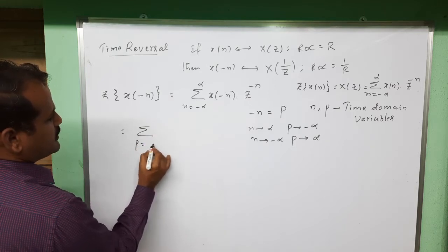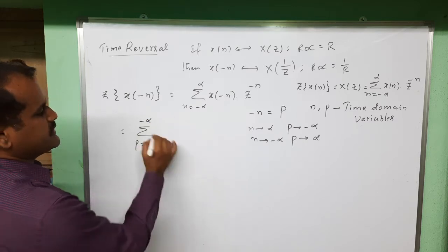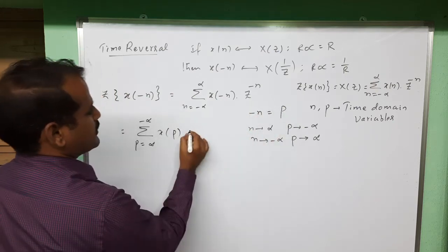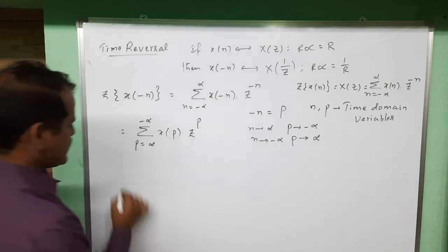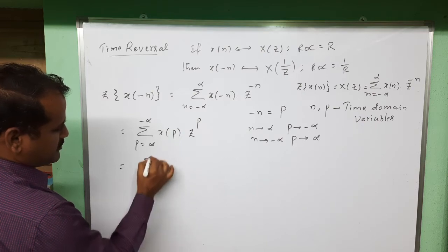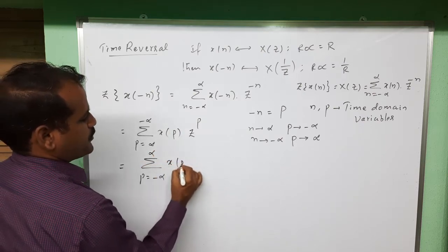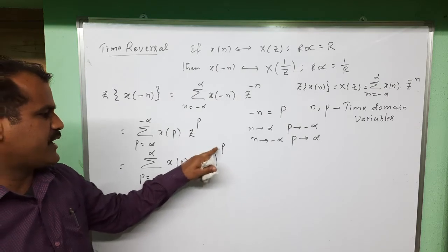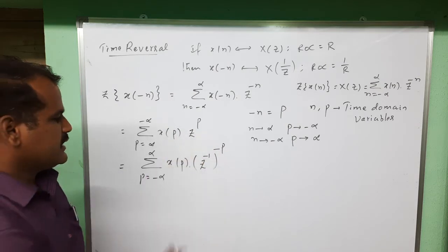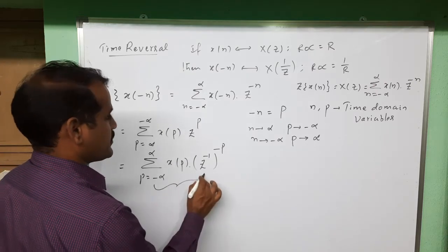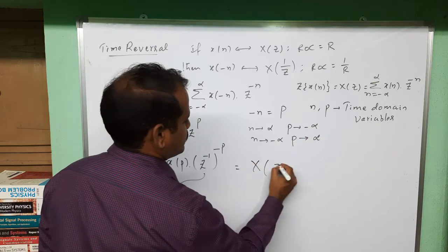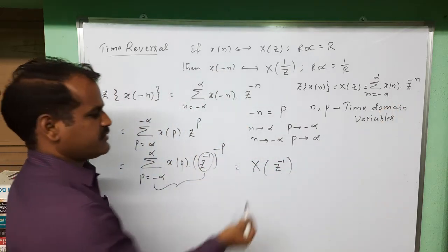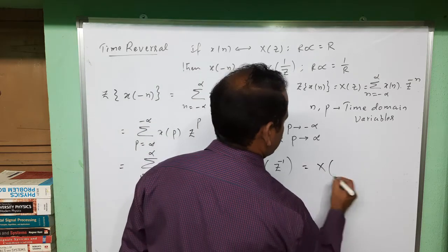So the summation goes from P = +∞ to -∞ of X(P) and Z^(-n) is rewritten as Z^(-n). Since -n = P, we have Z raise to minus n written as Z^(-1) whole to the power of -P, giving Z^(P) (minus times minus is plus). Reversing the limits, this becomes the summation from P = -∞ to +∞ of X(P) (Z^(-1))^(-P). Comparing with the standard formula, this is X(Z^(-1)), that is X(1/Z).